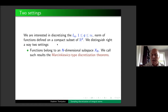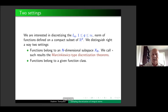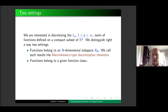One setting is when the functions belong to an n-dimensional subspace X_n. Another setting is that our functions belong to a given function class — the typical classical approach in approximation theory. For instance, a class of functions which have some smoothness like bounded derivative or bounded mixed derivative in the multivariate case. Usually these classes are sets in an infinitely dimensional space. These two settings have fundamental differences between them, and we will concentrate only on the first one.